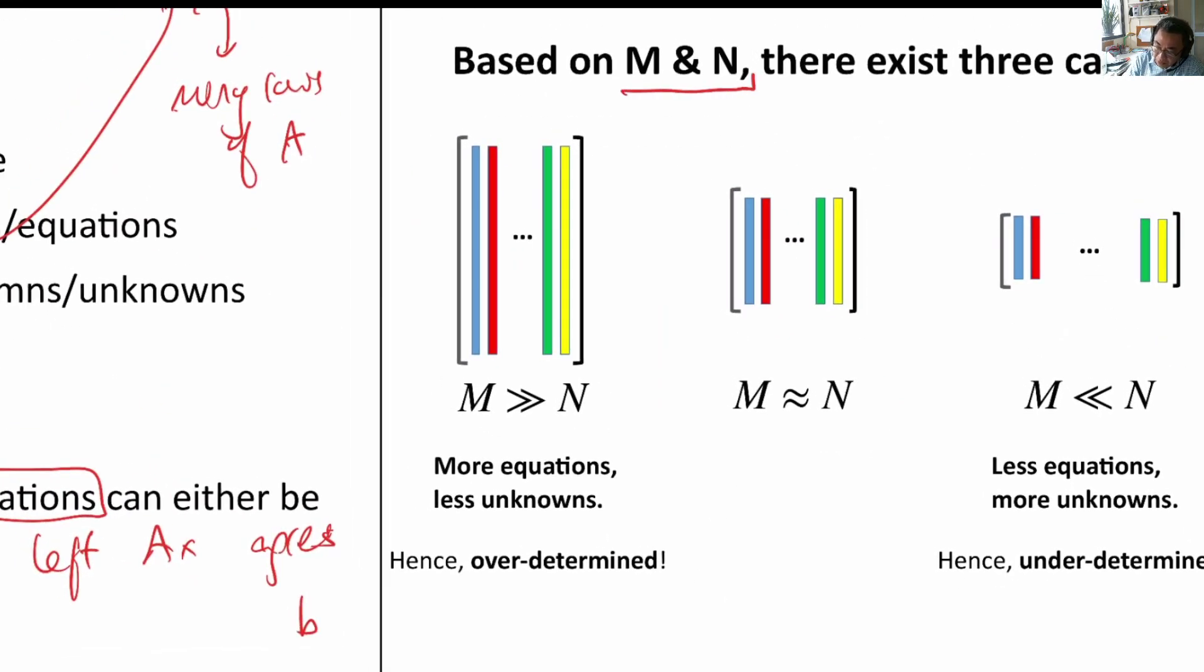Now, depending on the size of M by N, so this is number of rows, and here is the number of columns 1, 2, until N. So, when M is greater than N means that it is a tall and thin matrix. Then, we have more equations because each row represents one equation. We have more equations than unknowns.